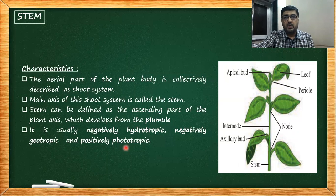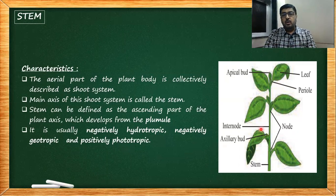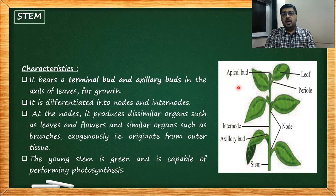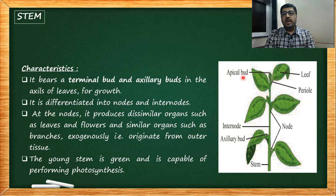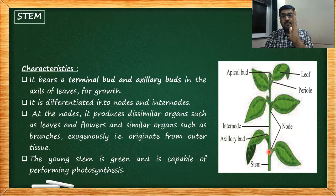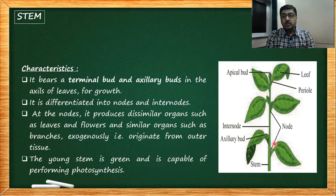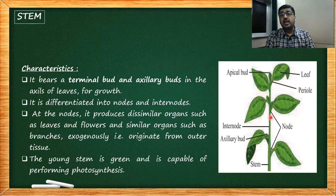The stem is usually negatively geotropic and positively phototropic — away from the earth and towards the light. Now if you look at this diagram, it shows the structure of the stem. It bears a terminal bud at the apex, called the apical bud or terminal bud. There are also axillary buds located in the axil of a leaf. If this is the stem and this is the leaf, the angle they make with each other is known as the axil.